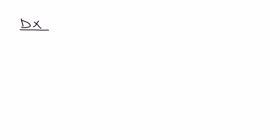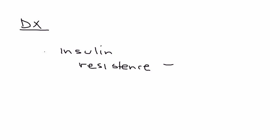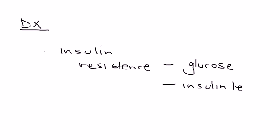In terms of diagnosis, other than the clinical aspect of looking at the rash, you have to look deeper into what possible underlying medical condition may be present. Since acanthosis nigricans is associated with insulin resistance, you should order a glucose level, an insulin level, and check for diabetes by checking the hemoglobin A1c.